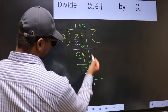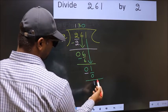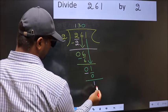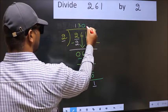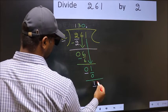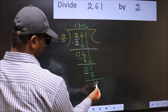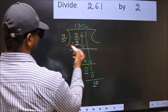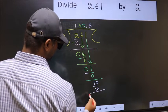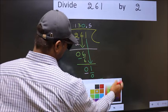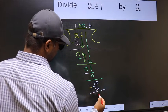Now here we did not bring any number down. And 1 is smaller than 2. So now you can put a dot and take 0. So 10. When do we get 10 in 2 table, 2 fives, 10. Now you subtract. 10 minus 10, 0.